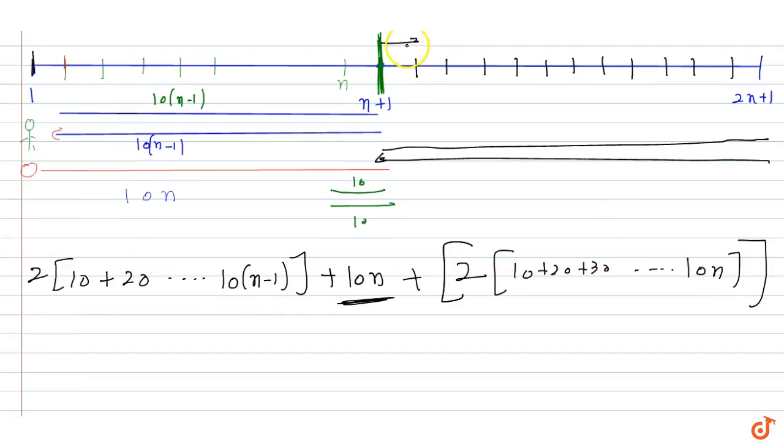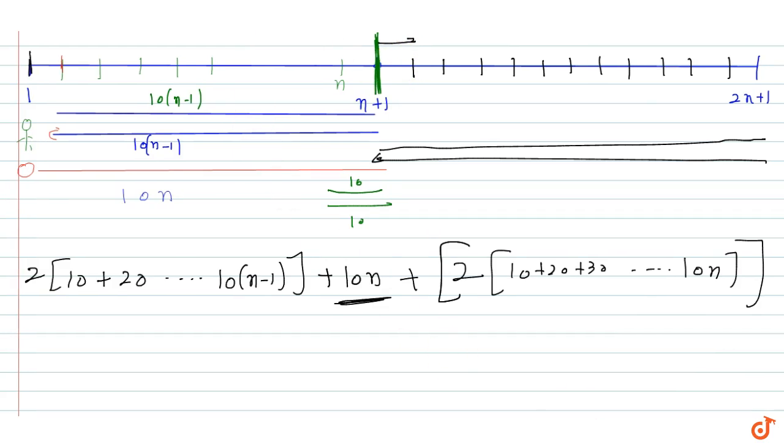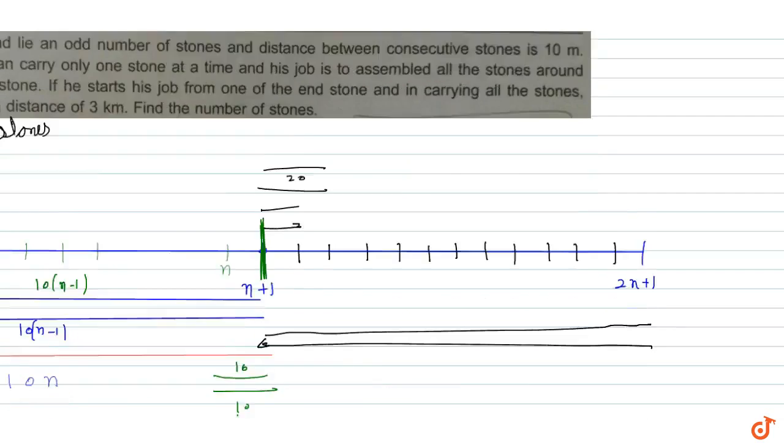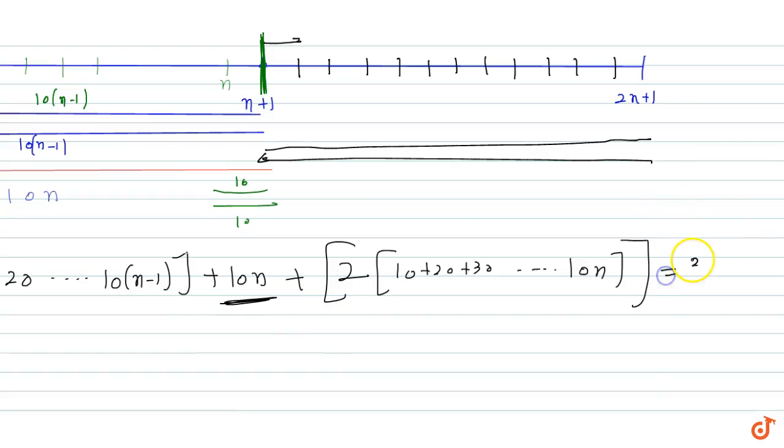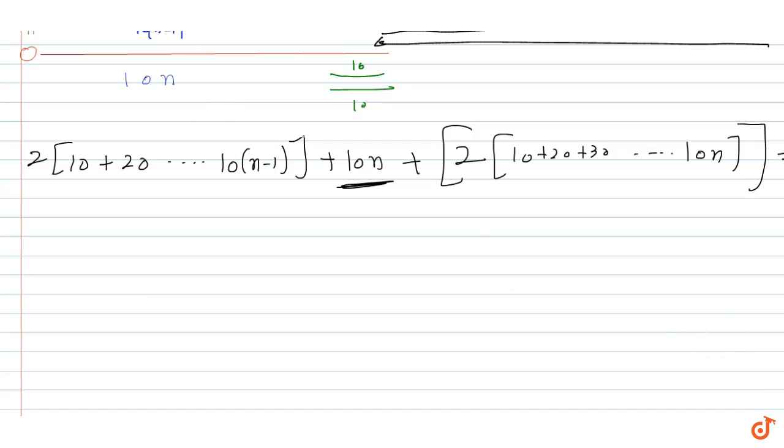Since at the end of the process all stones are in the middle, the total distance traveled is given as 3 km, which is 3000 meters. So we have 2[10 + 20 + ... + 10n] + 10n = 3000.